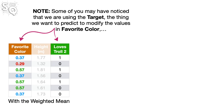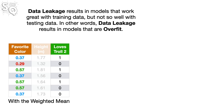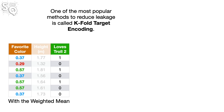Note, some of you may have noticed that we are using the target — the thing we want to predict — to modify the values in Favorite Color. And doing this sort of thing is a data science no-no that we call data leakage. Data leakage results in models that work great with training data but not so well with testing data. In other words, data leakage results in models that are overfit. The good news is that there are a bunch of relatively simple ways to avoid data leakage, or at least reduce the amount of data leakage, so that you can use target encoding without overfitting your model. One of the most popular methods to reduce leakage is called k-fold target encoding.